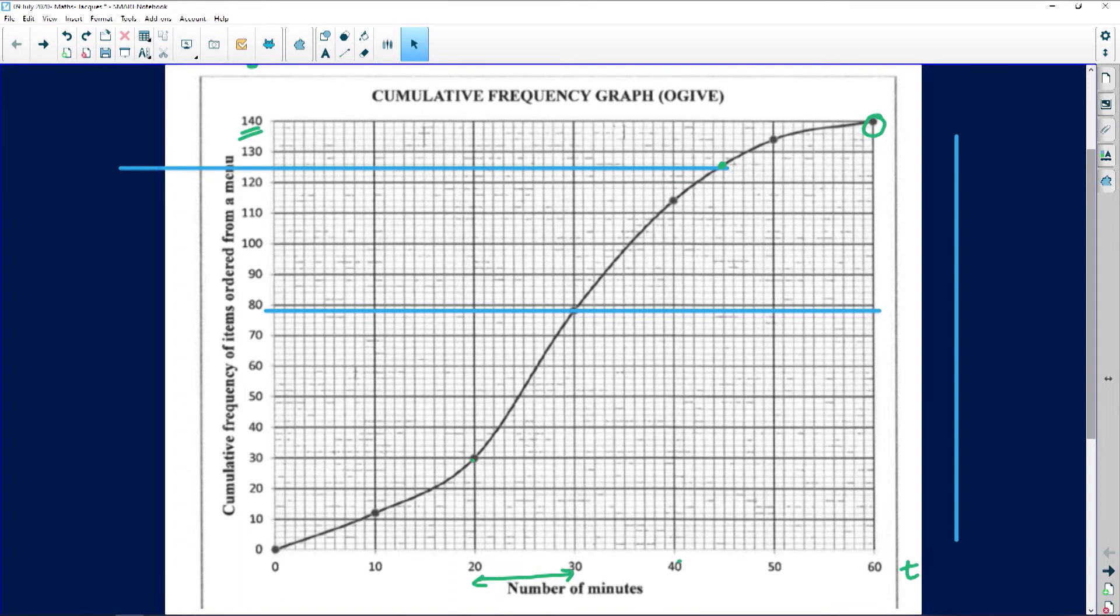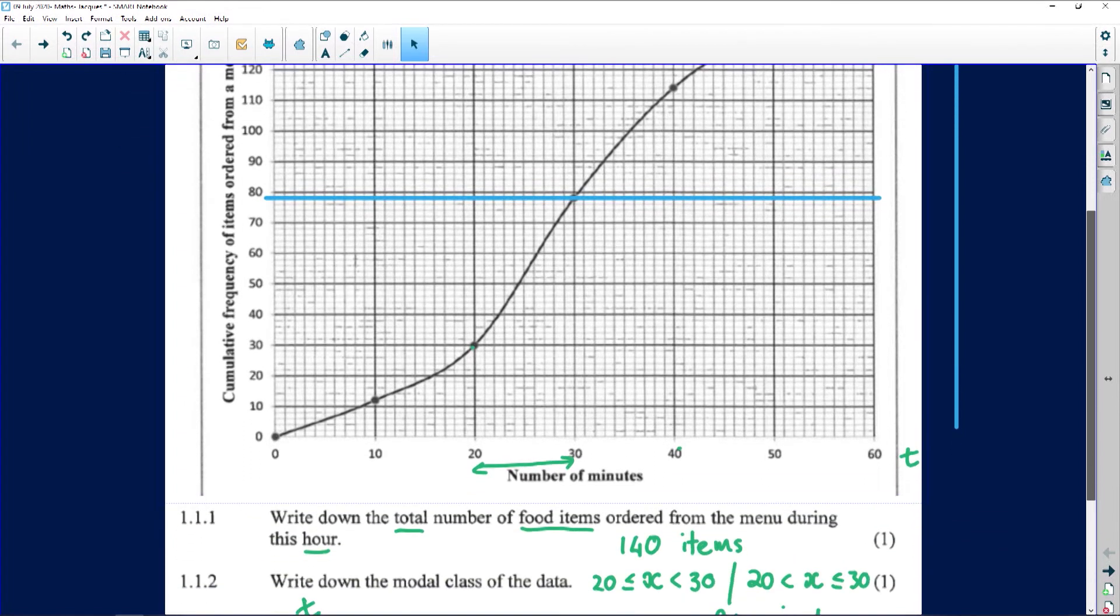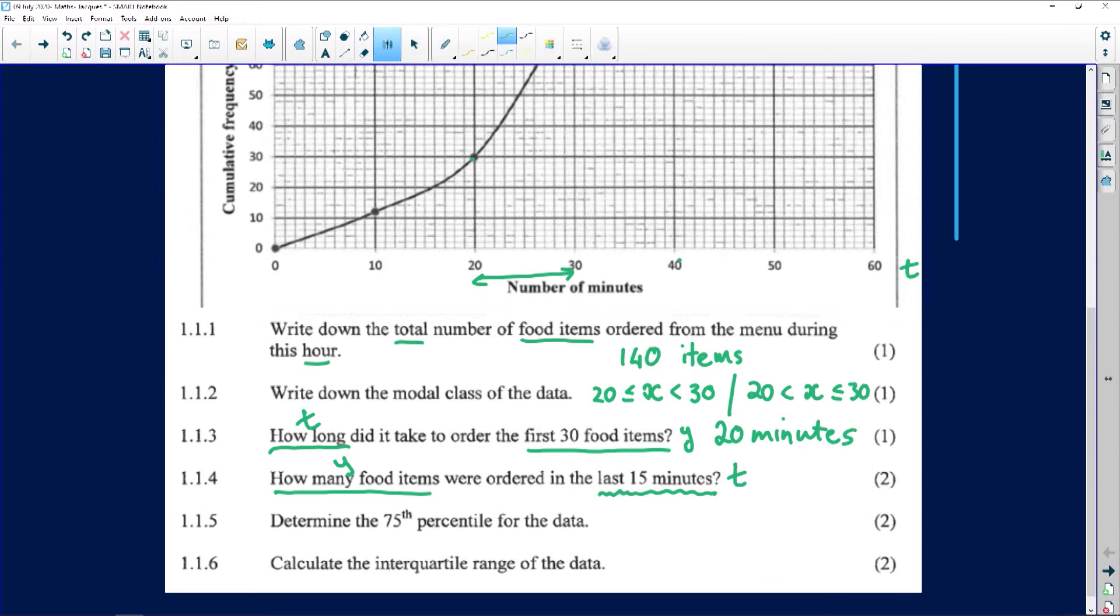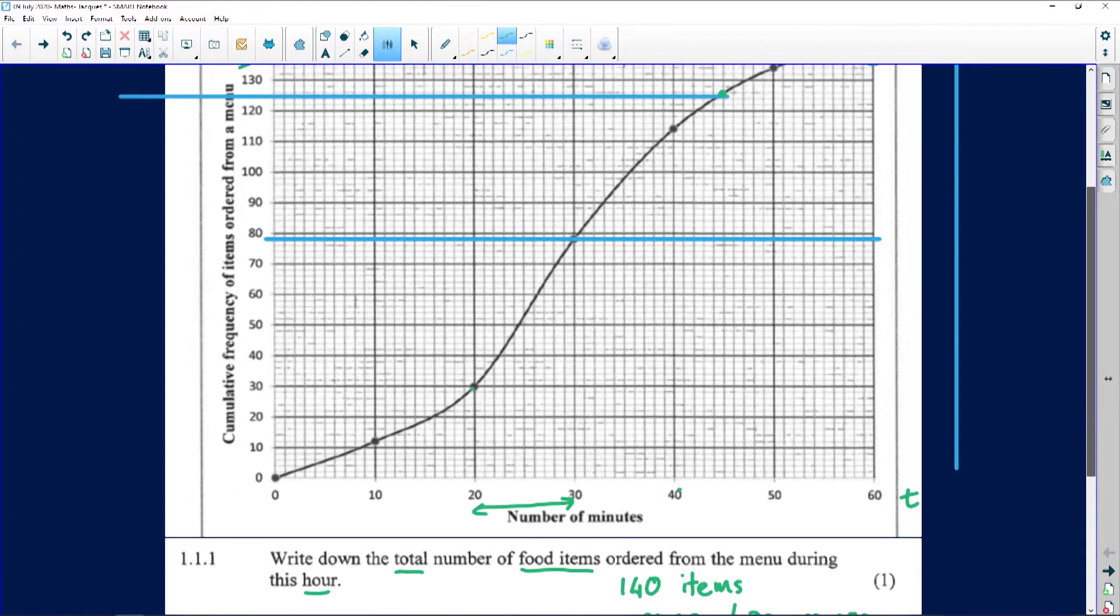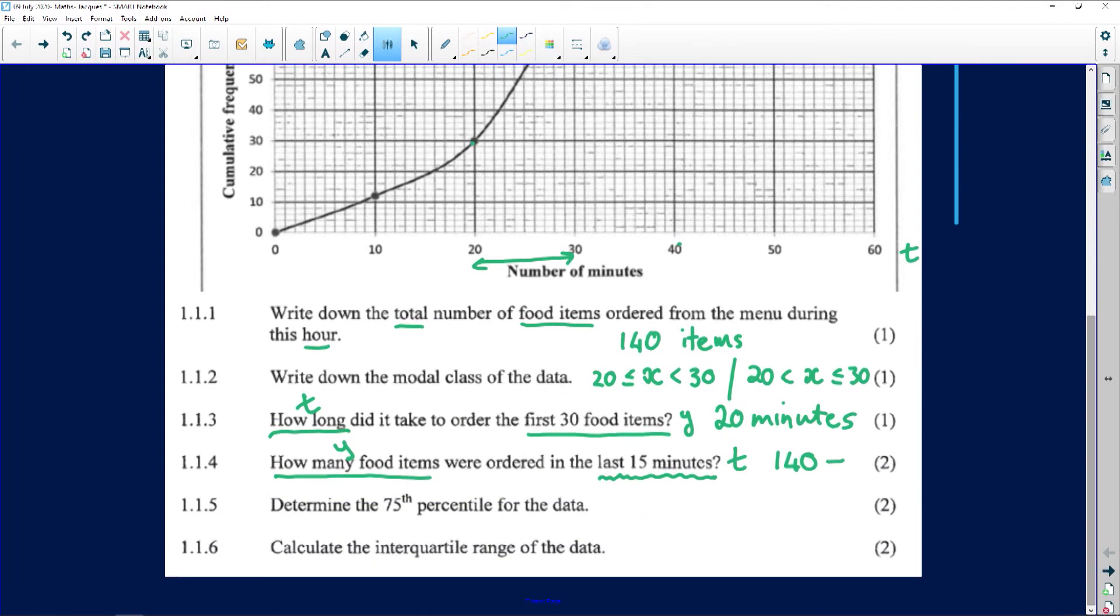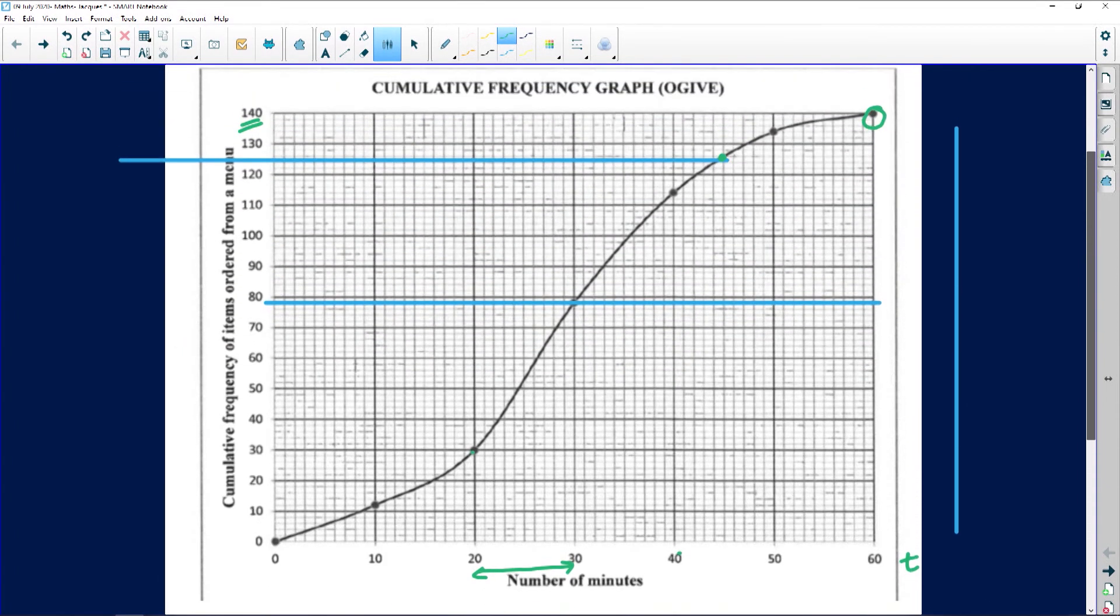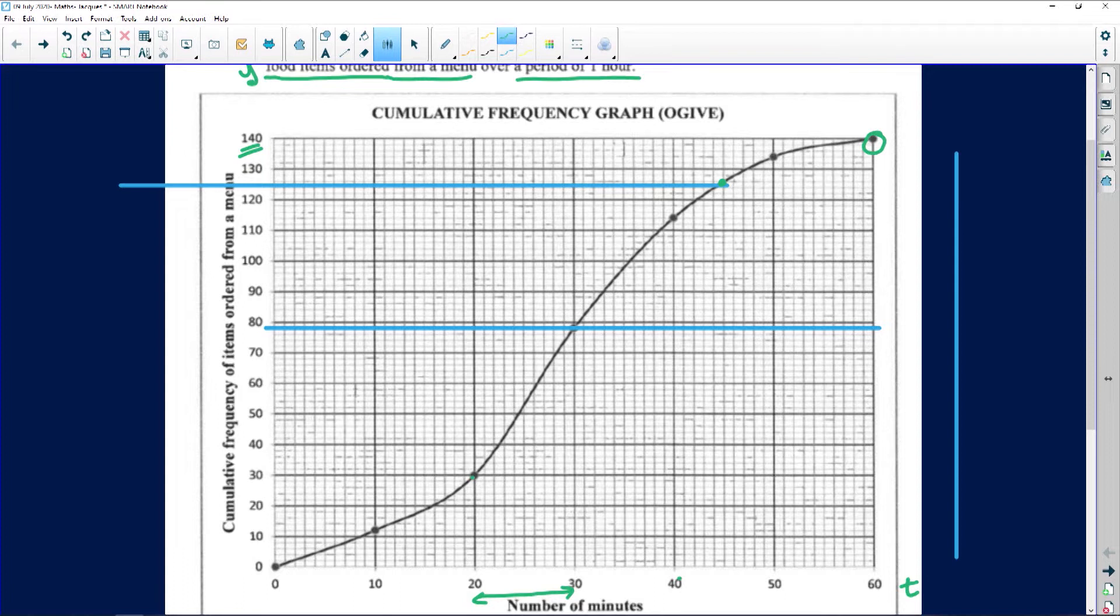Now if you look at the scale here, each horizontal line represents two units. So 122, 124, it looks like it. So the number of items that were sold in the last 15 minutes will be 140. I'm going to do it on the side here. 140 is the total amount minus, remember this is for two marks, minus the number that we saw up there, which was 120. It looked like it was 126 actually, not 124. So 126 and the difference between those two is 14. So 14 items was sold in the period of time from there to there. That little bit there represents 14 items.